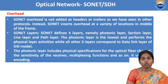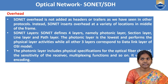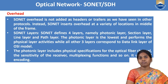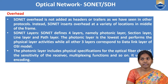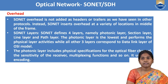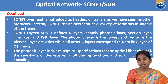SONET overhead is not added as header or trailer as in other protocols. Instead, SONET inserts overhead at various locations in the middle of the frame. The frame structure has four layers: photonic layer, section layer, line layer, and path layer. The photonic layer is the lowest and performs physical layer activity, while all other three layers correspond to the data link layers.